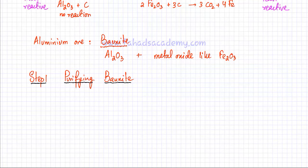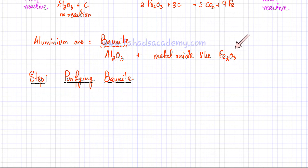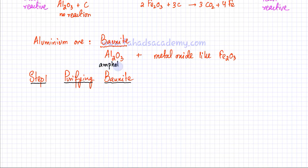The first step in the extraction process requires the purification of bauxite. Bauxite, which is aluminium oxide, has a lot of other metal oxide impurities mixed with it. One key thing to know is that aluminium oxide is amphoteric — Al2O3 is amphoteric — meaning it reacts with both acids and bases. On the other hand, other metal oxides like Fe2O3 are basic in nature.